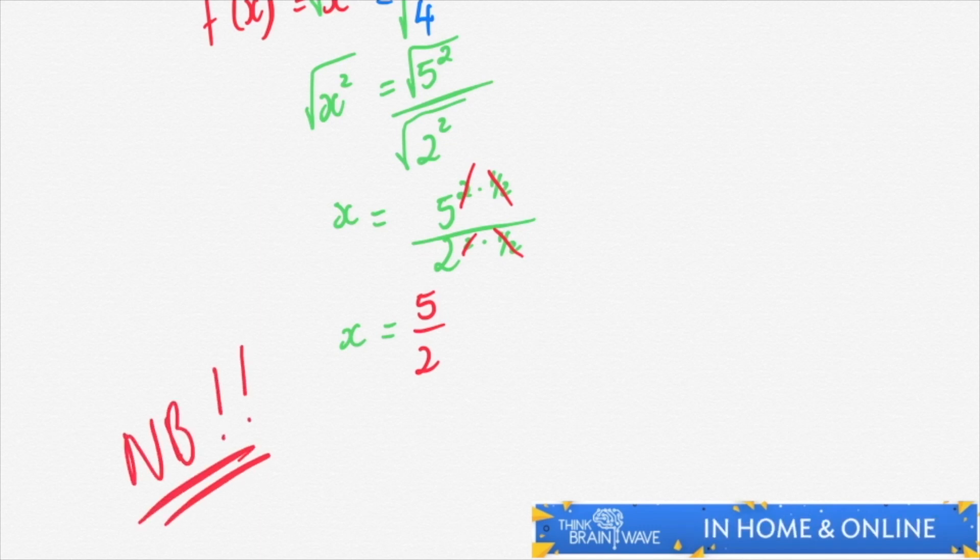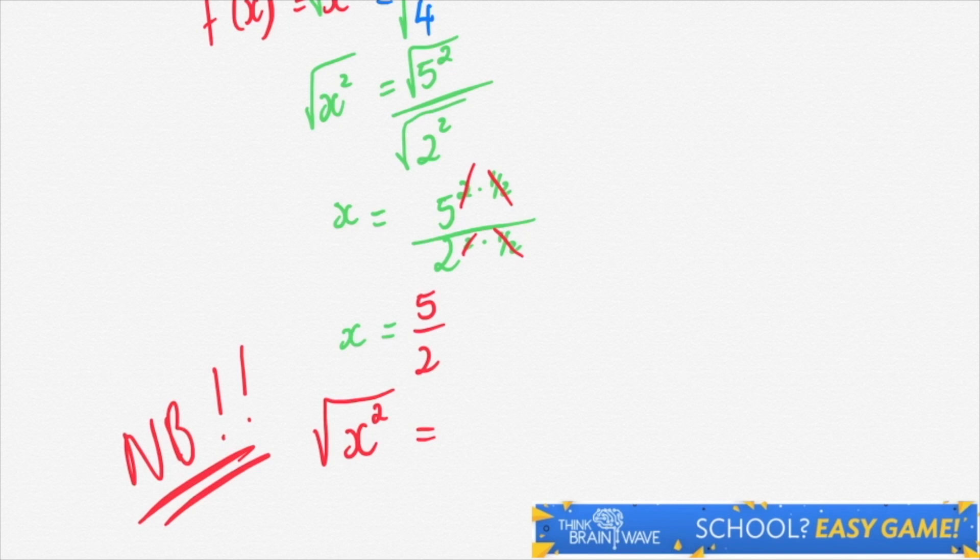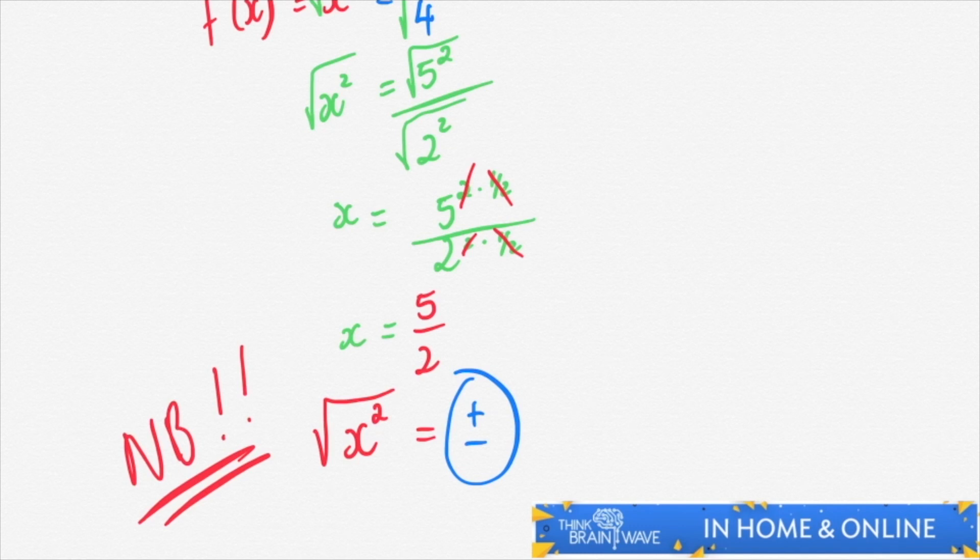Please take serious note of this. The square root of x squared is equal to plus or minus x, because if I take minus 2 and I square it I get 4, and the same goes for if I square 2 I also get 4. So your answer is always going to be plus or minus x in this case.